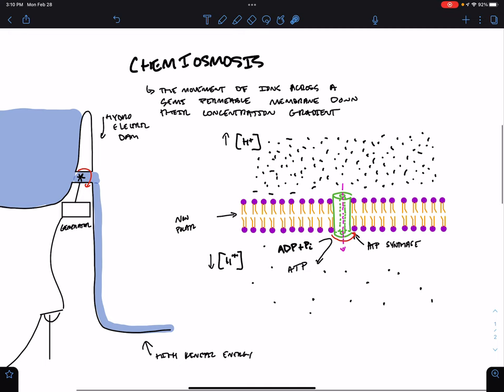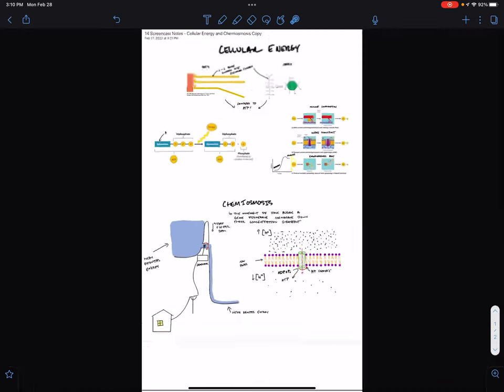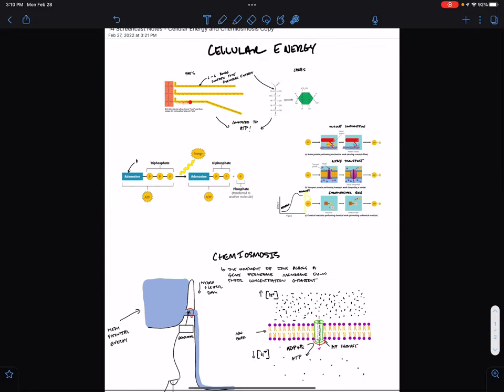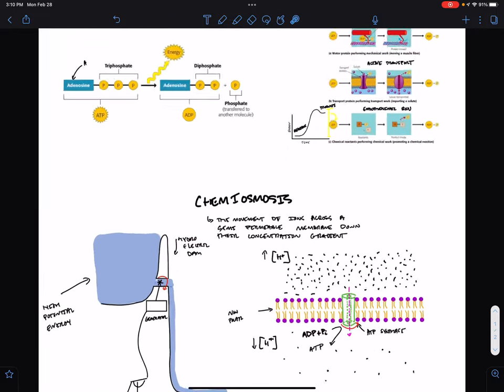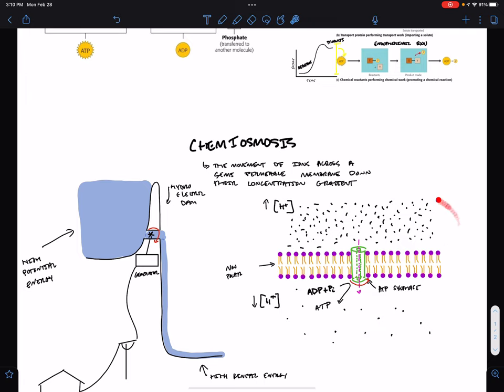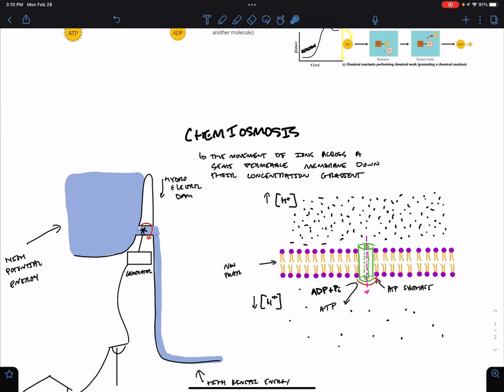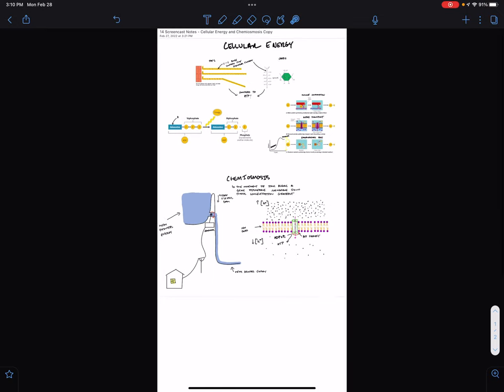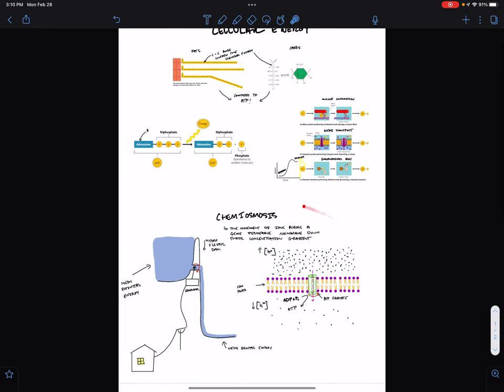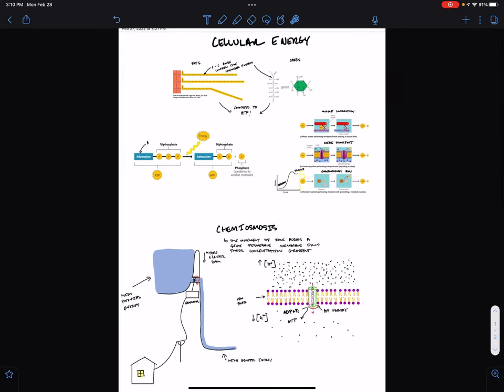So chemiosmosis is another way for a cell to transform energy from one form to another and store energy in the cell. So not only can energy be stored in the form of bonds between atoms, but it can also be stored in the form of chemical gradients. Okay, so that's more on chemiosmosis coming up. We're going to see it in both the processes of cellular respiration and photosynthesis.